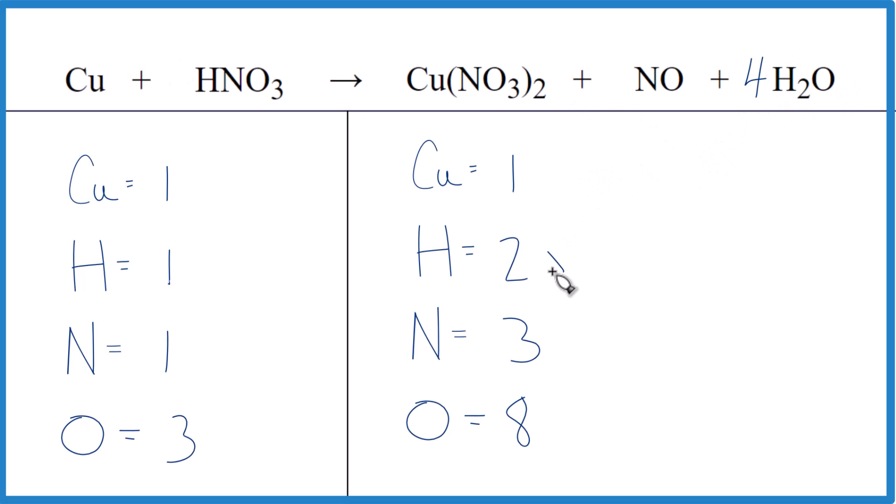So now I have two times three is six, plus one is seven, plus four times one. So I have 11 oxygens, so eight hydrogens. Let's put an eight over here, one times eight.